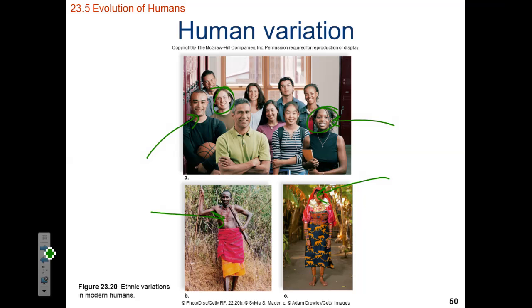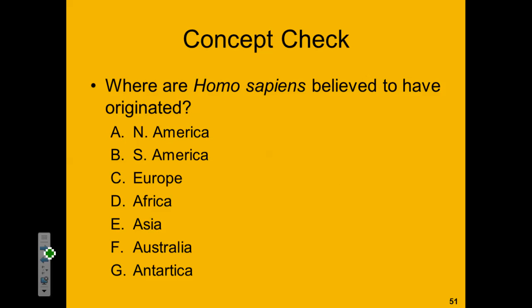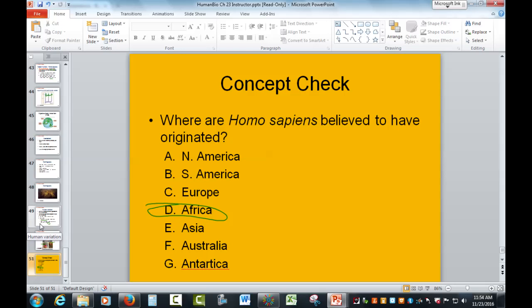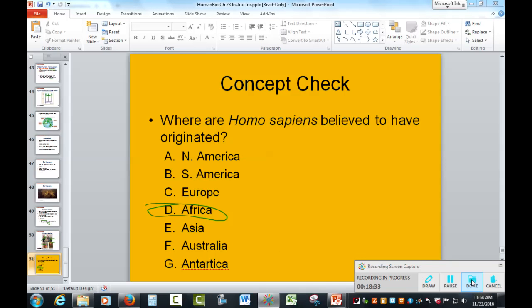Concept check: where are Homo sapiens believed to have originated? North America, South America, Europe, Africa, Asia, Australia, or Antarctica? The correct answer is D — Africa — the replacement or out of Africa hypothesis. And that's all we have on the evolution of humans. If you have any questions, please feel free to post them in the class discussion board, shoot me an email, or swing by my office when you are on campus. Happy studies!